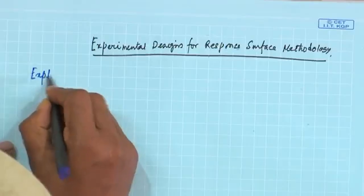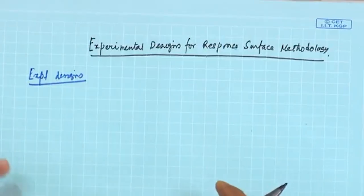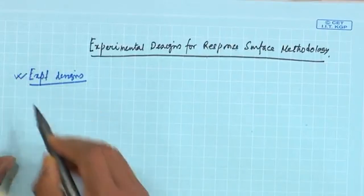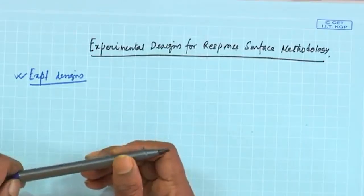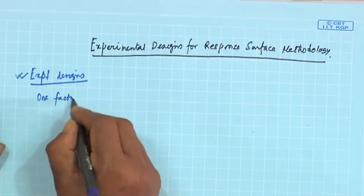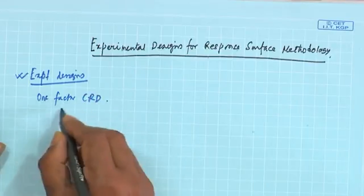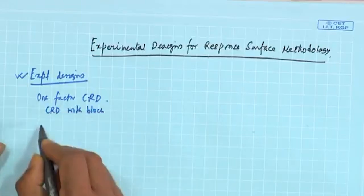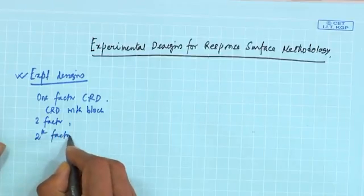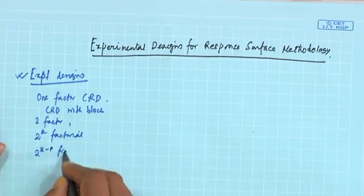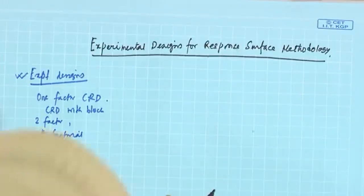When we talked about experimental designs in the first few classes, I explained the names and thereafter we elaborated all those designs. The experimental data based on those designs needs to be analyzed, and the analysis schemes were also given. For example, we started with one-factor randomized design, complete randomized design, then complete randomized design with blocking, two-factor design, three-factor multi-factor design, then the special class 2^k factorial design, then 2^(k-p) fractional factorial design.